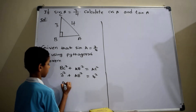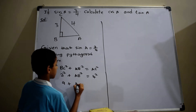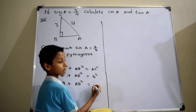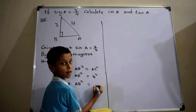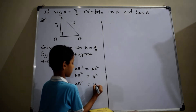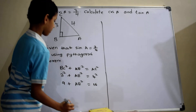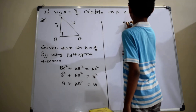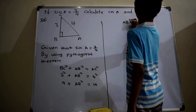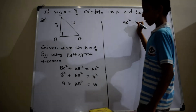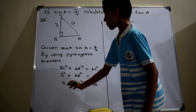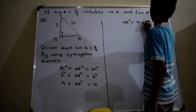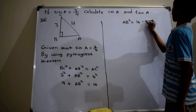3 squared equals 9, plus AB squared equals 4 squared equals 16. I am transposing 9 to the right-hand side, which gives AB squared equal to 16 minus 9.